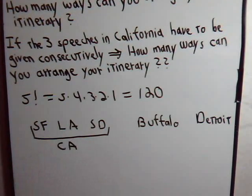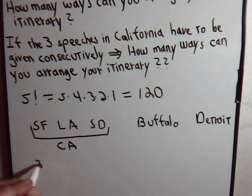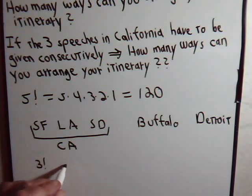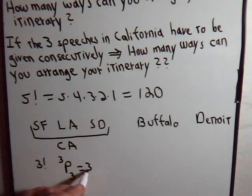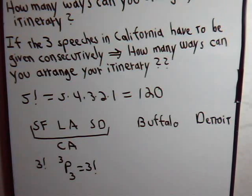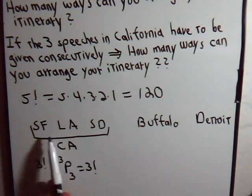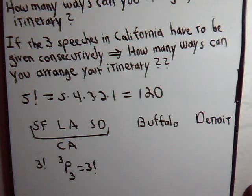The number of ways that we could arrange this itinerary within California — there are three different cities and we're going to visit all three of them — so that would just be three factorial, or six different ways of arranging that itinerary.